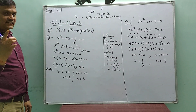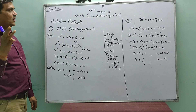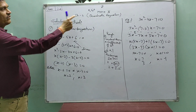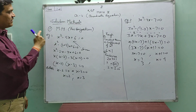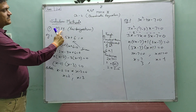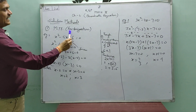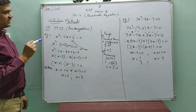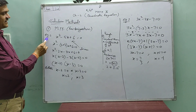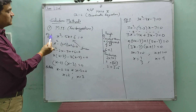In the last class, I told you there are three methods of solving quadratic equations. The first of them is called MTS — Middle Term Splitting. It is also known as factorization. It can be understood by one or two examples.